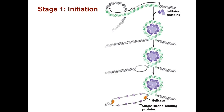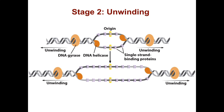The process begins with initiation. Initiator proteins, such as DnaA, bind to the origin of replication, oriC, and cause a short stretch of the DNA to unwind. The unwinding allows helicase and other single-stranded binding proteins to attach to the single-stranded DNA. The DNA helicase binds to the lagging strand template at each replication fork and moves in the 5' to 3' direction along the strand, breaking the hydrogen bonds between the bases and moving the replication fork along.